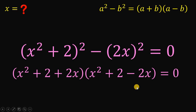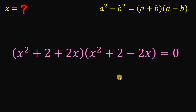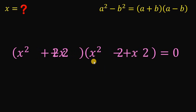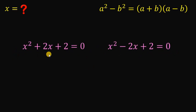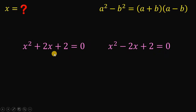Let's focus on this factored form and rearrange some terms. Since it is equal to zero, it follows that at least one of the factors must equal zero. So we can say x squared plus 2x plus 2 equals zero, or x squared minus 2x plus 2 equals zero. To solve for x, we will use the quadratic formula.